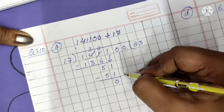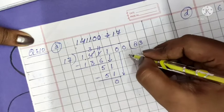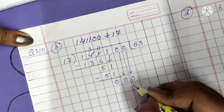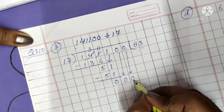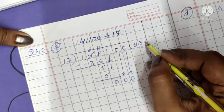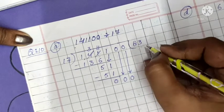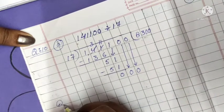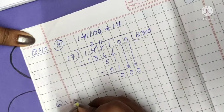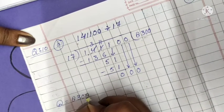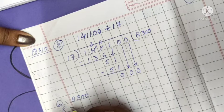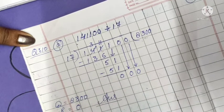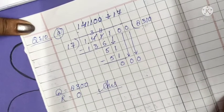Now there are two zeros in the dividend remaining. We copy them down and transfer them to the quotient part. So our quotient will be 8300 and remainder will be 0. This question is very easy.